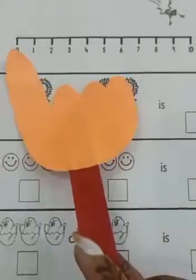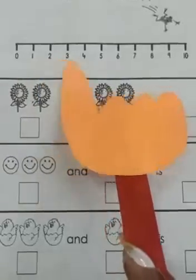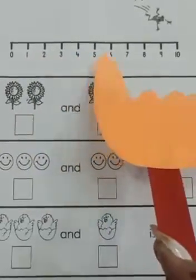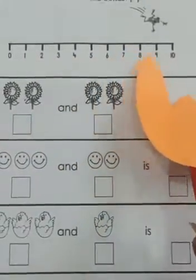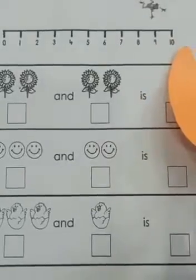But before we start, let's do forward counting. 0, 1, 2, 3, 4, 5, 6, 7, 8, 9, 10. Good job.